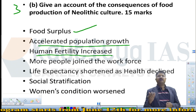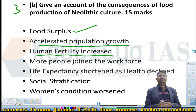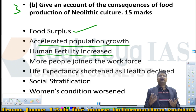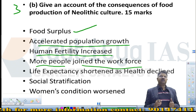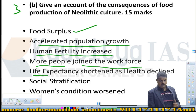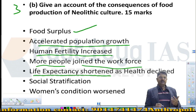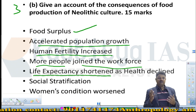But according to paleoanthropologists and archaeologists, by their conjectural analysis, life expectancy actually went down rather than the other way round, because health declined in general. The main reason was that the variety of the food basket got reduced. They started depending only on a few food items — like cereals such as wheat and barley — whereas a hunter-gatherer man had a lot of variety in his food basket.